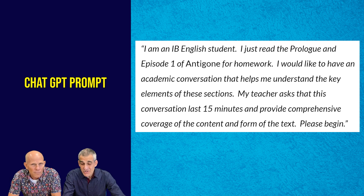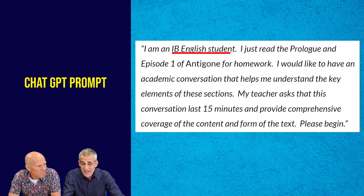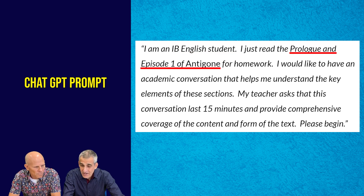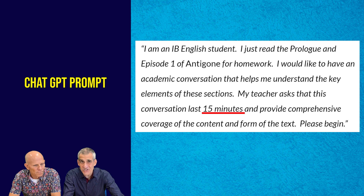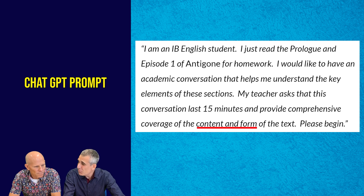That's meaty! Some things I noticed here: once again, we're identifying ourselves as an IB English student — very important — so the bot can adjust the input accordingly. We've told the bot what we've read: prologue, episode one. We're telling the computer that we want to have an academic conversation, so that gives the computer some insight into the tone and the formality. By talking about the 15 minutes, we understand that we want it to be fairly comprehensive but not take a long time. And we want to talk about both the content and the form.